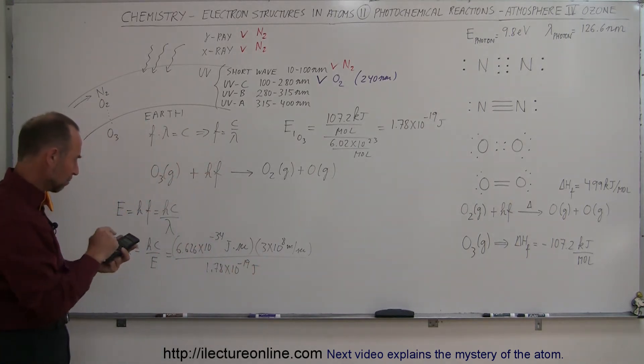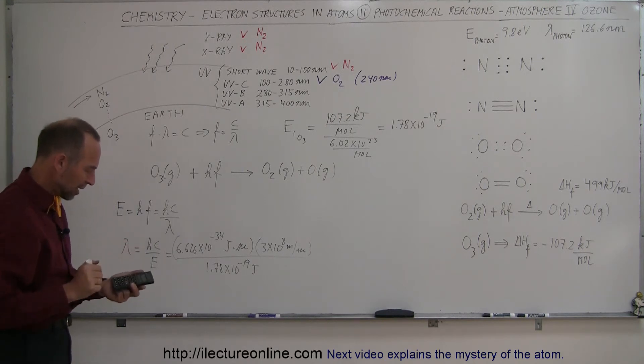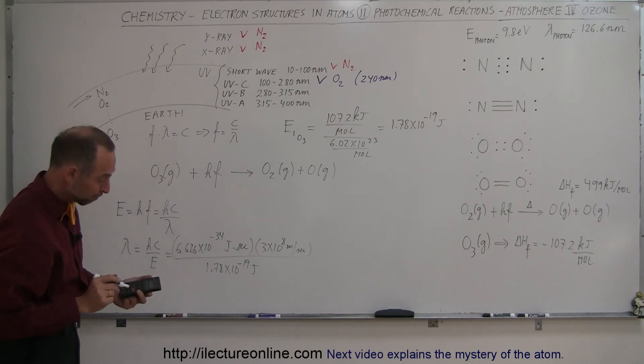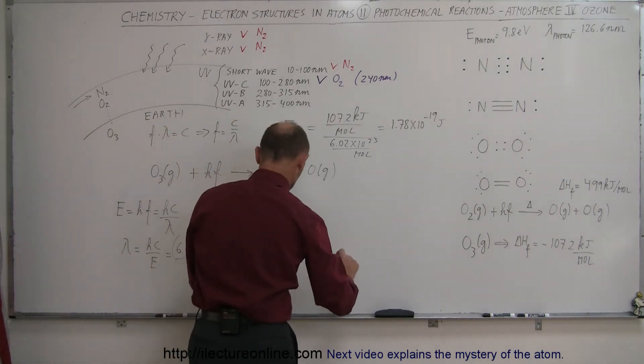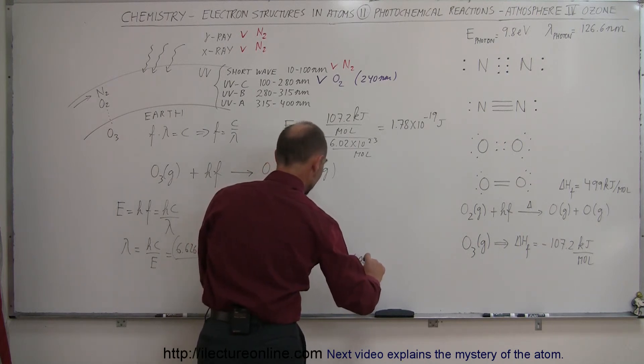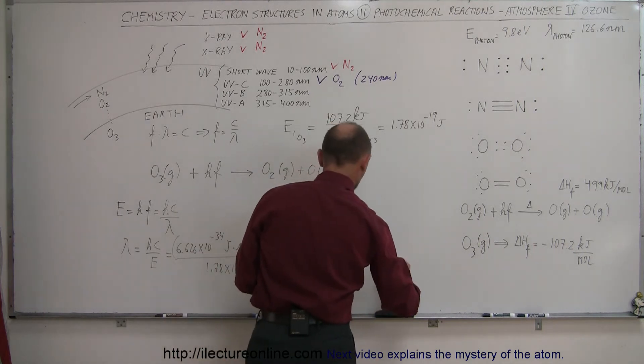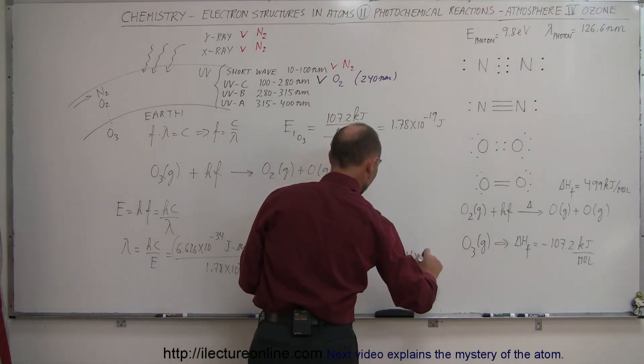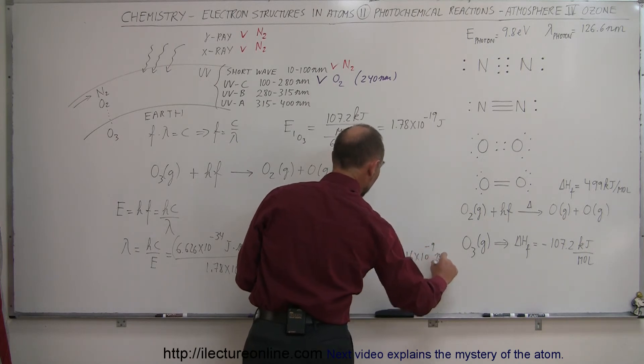Let's take the inverse of that and multiply. It looks like we get 1,116 nanometers, which equals 1,116 times 10 to the minus 9 meters.